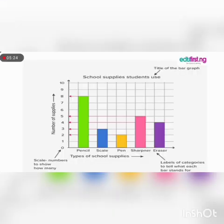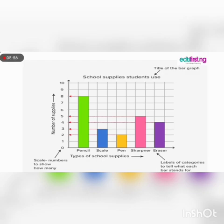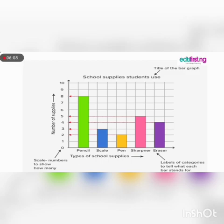The bar graph looks like this. The number of items is on your left-hand side — that's your vertical axis, your Y-axis — and your X-axis will have the items: pencils, scale, pen, sharpener, eraser. You check the number of correspondence — pencil is 8, so you make it correspond with number 8. Scale, which is ruler, there are 3, so you make it correspond with 3. You can see that everyone is having gaps in between them — this is what we call a bar chart, with equal gaps between the bars.